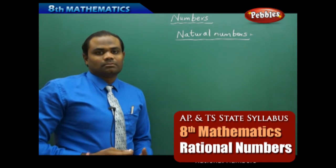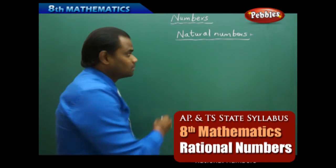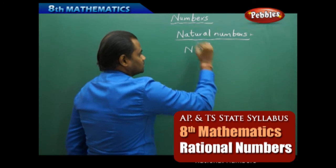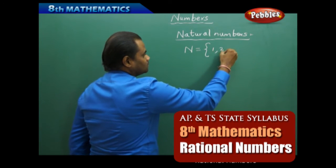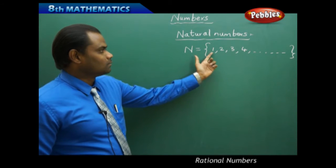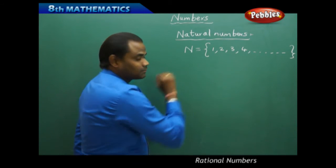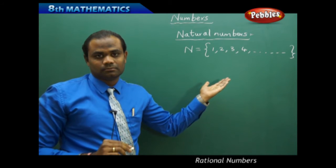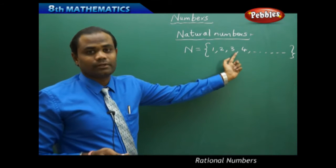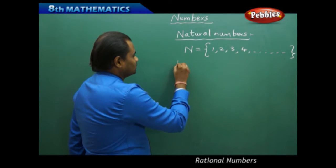Natural numbers are numbers expressed in numerator form but they do not have a denominator. They are generally denoted by N, and the set notation for natural numbers starts with 1, 2, 3, 4, and so on till infinity. We call them natural numbers because they only have the numerator, starting at 1 with consecutive values 2, 3, 4, and so on. Next comes whole numbers.